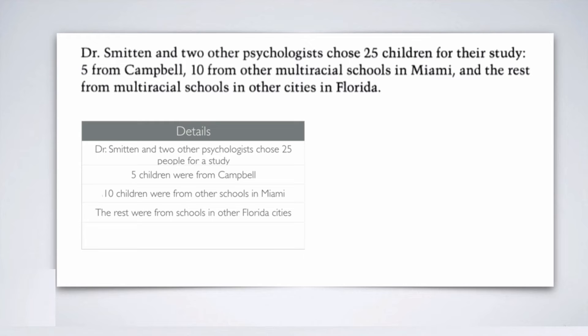Now let's look at the inferences — the conclusions we can make from this sentence. These will be things we did not explicitly read, but that are obvious. An obvious conclusion we can reach easily is called an inference.